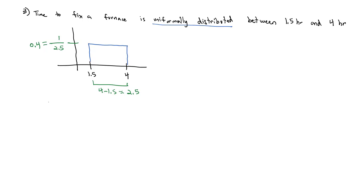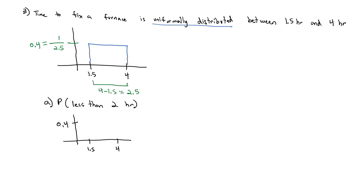Now that I know everything about this uniform distribution, I'm ready to answer questions and find probabilities, such as: what is the probability that the time to fix the furnace is less than 2 hours? For every continuous distribution problem, we'll always draw a picture. We're going from 1.5 to 4, the height is 0.4. There's our rectangle representing all the probabilities, but we want less than 2. So 2 is right about here, and I want this area to the left.